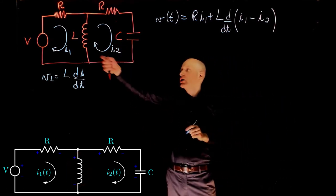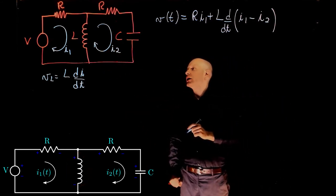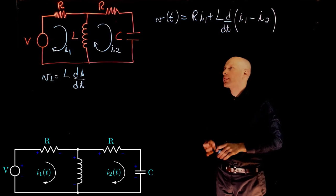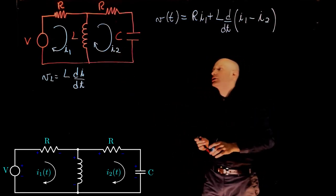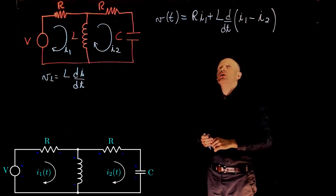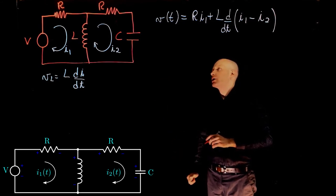Because again, we defined our current looping in that direction. If you now look at the second branch here, the second loop, we can derive a similar expression.